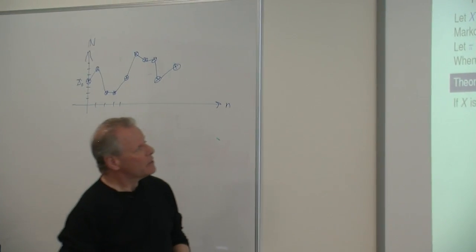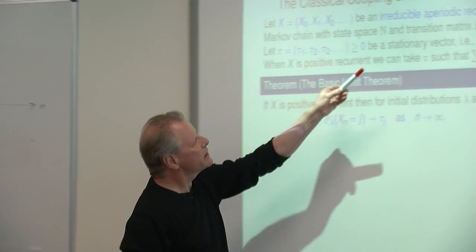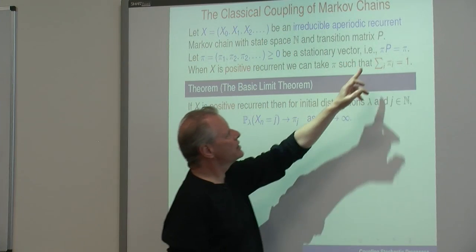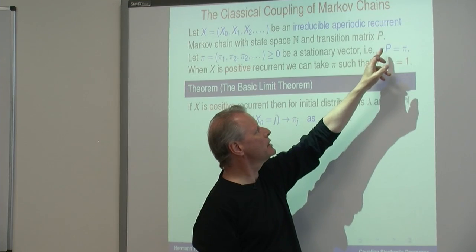So let the transition matrix be P, and let pi be the stationary vector. I am assuming irreducible aperiodic, which is standard. And on top of that, I exclude transient states — let's just consider recurrent chains. In the case of positive recurrence, it is well known, proved in the first courses on Markov chains, that there exists a stationary distribution. But it is also true that in the null recurrent case there exists a stationary vector.